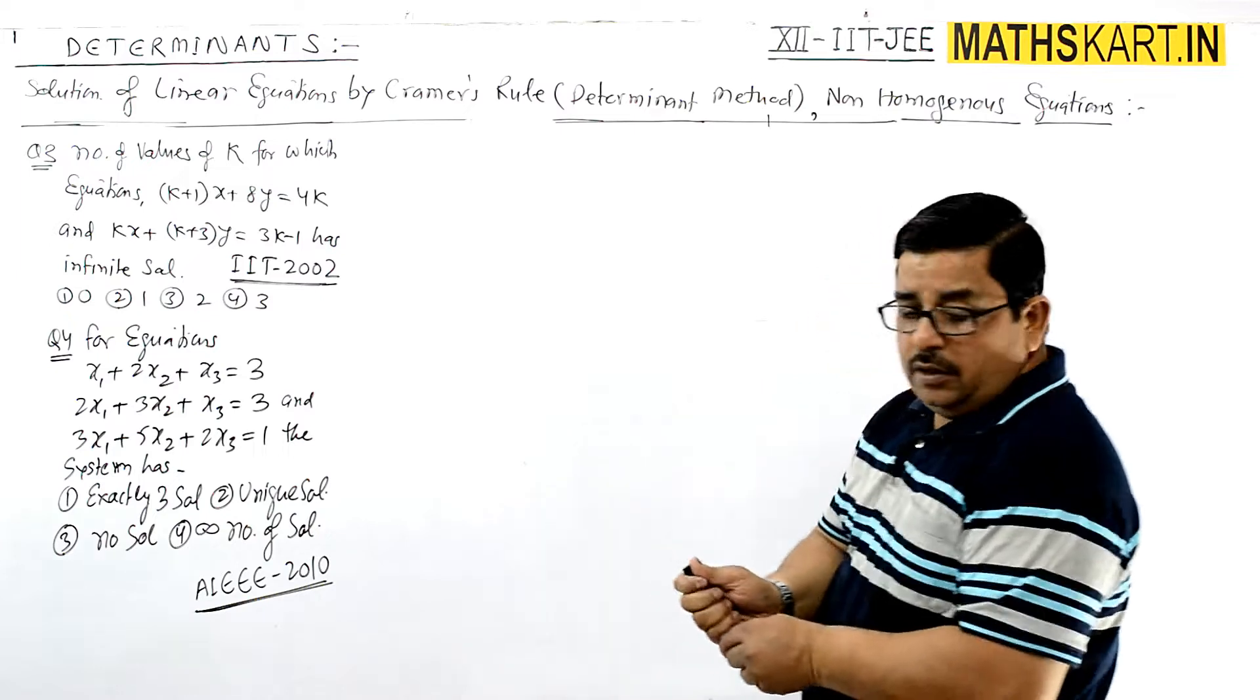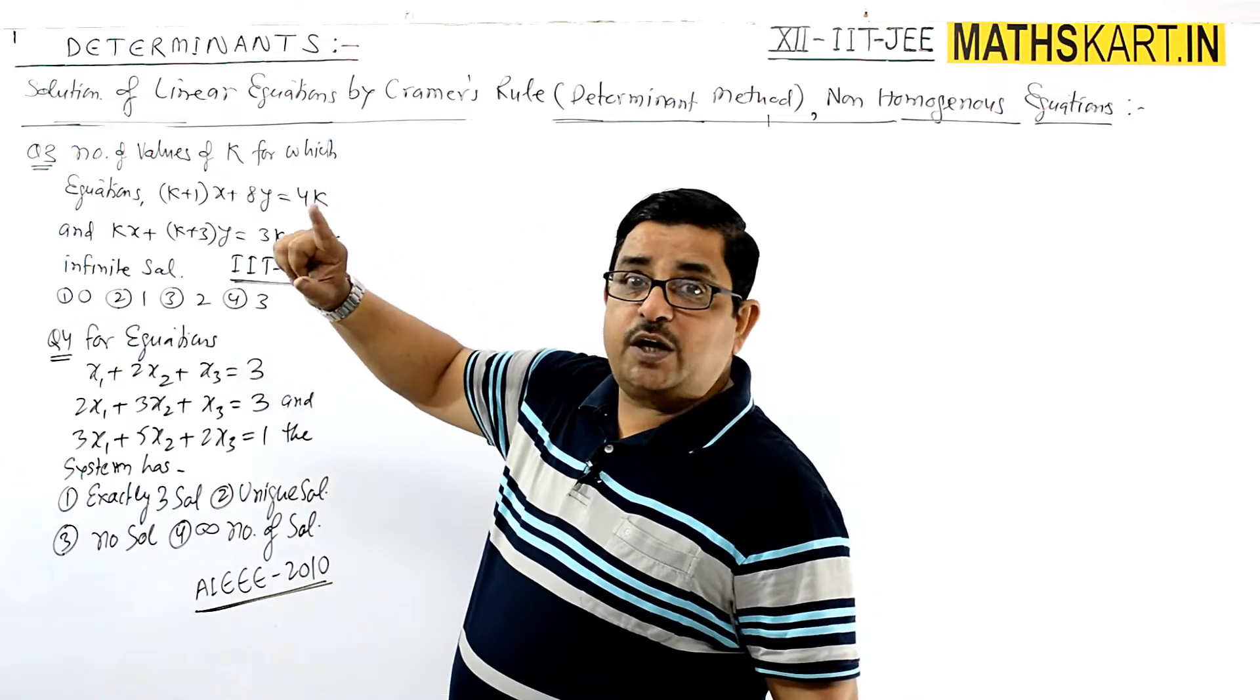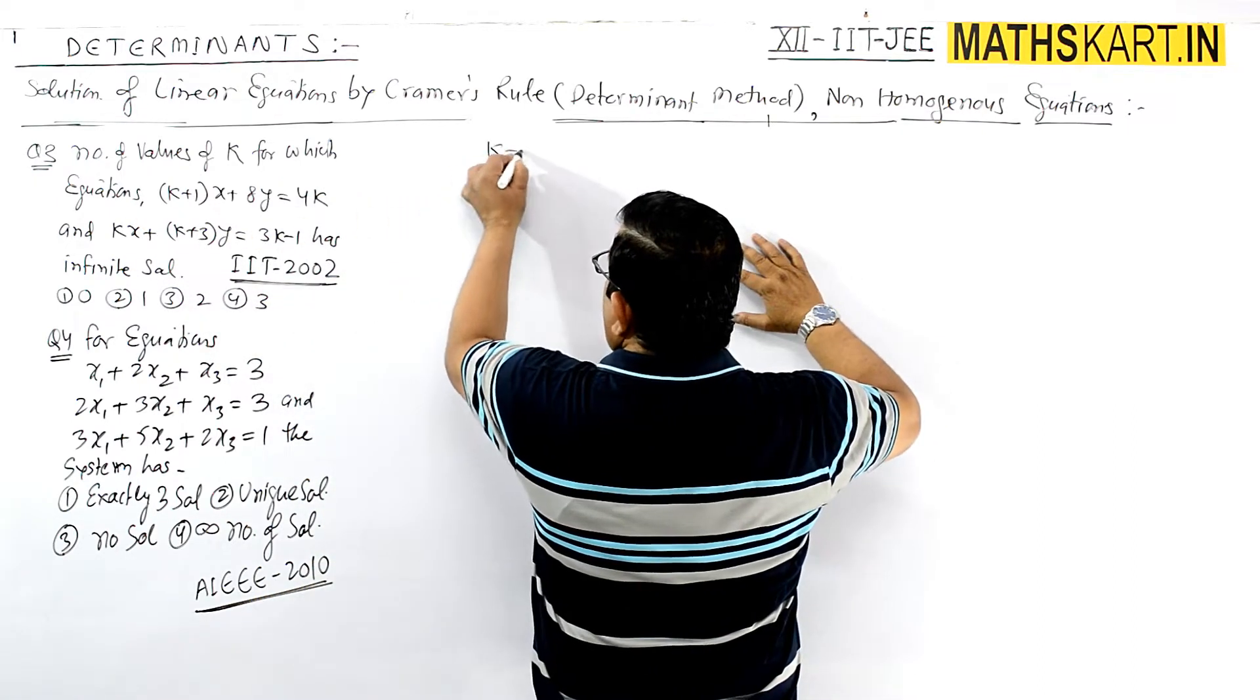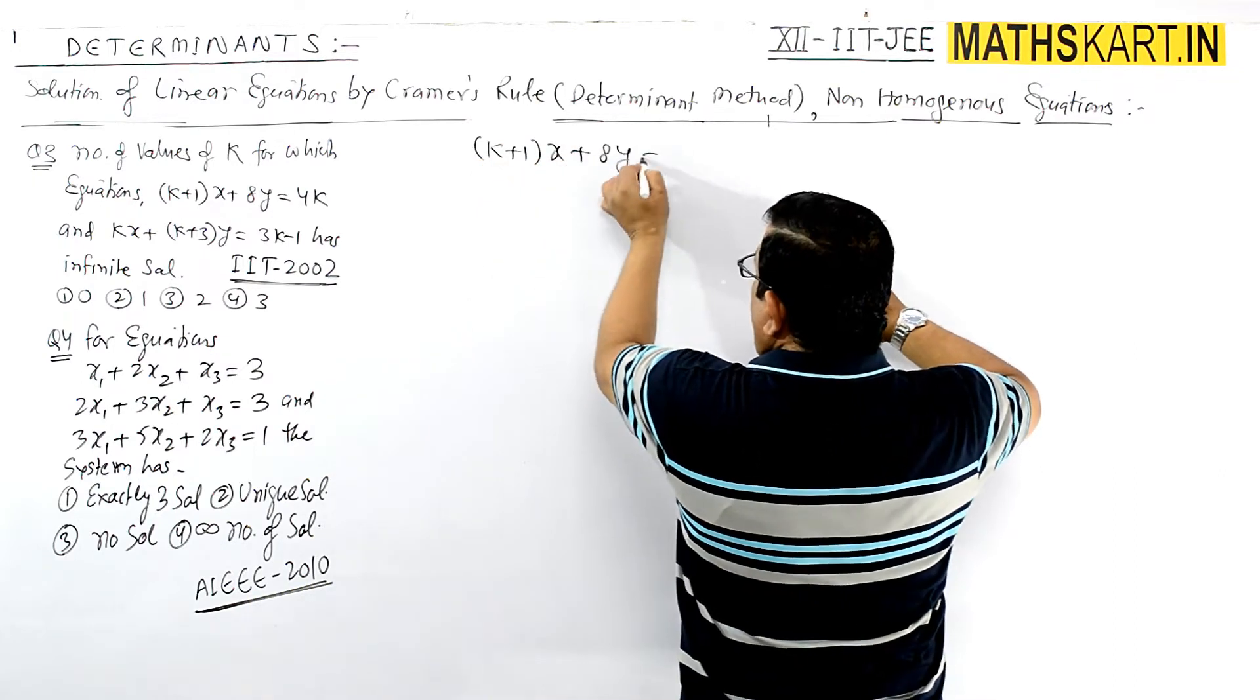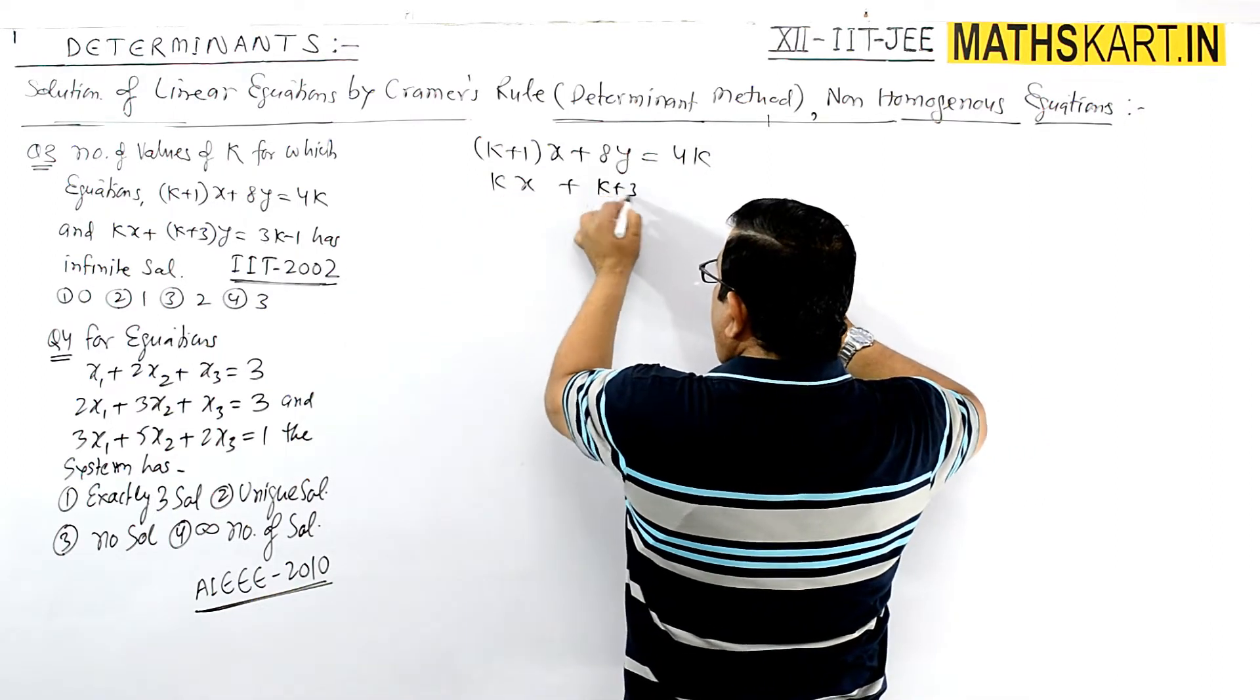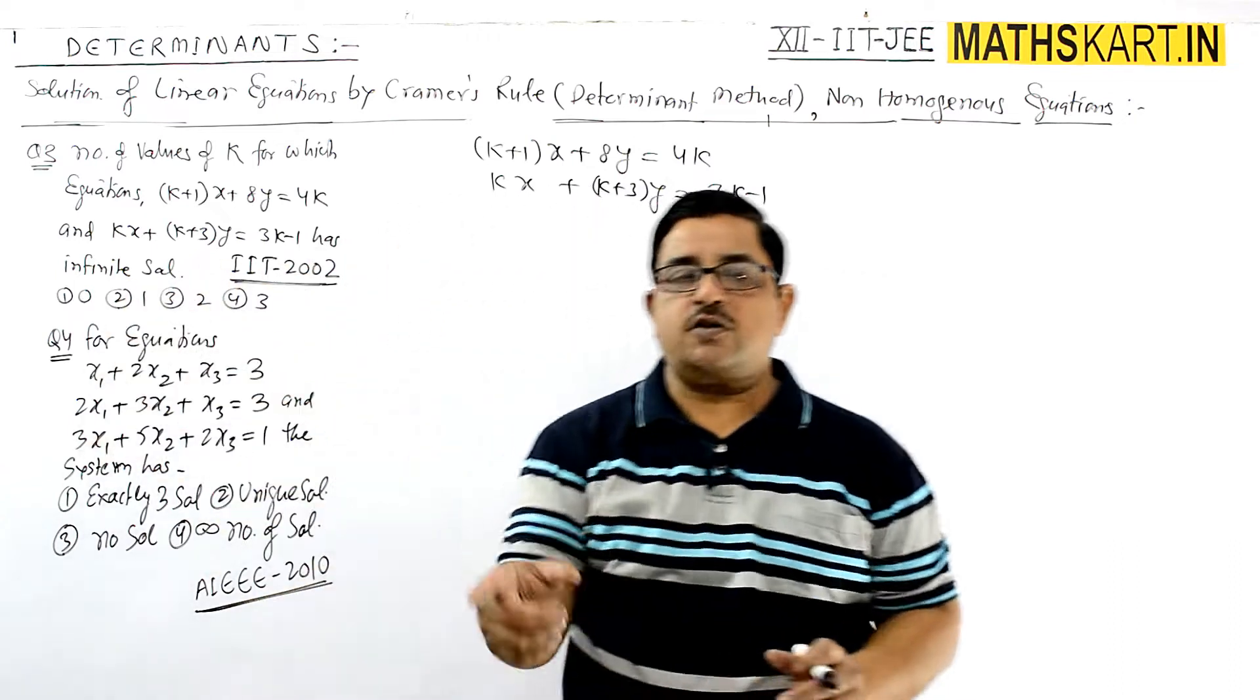Question three asks for the number of values of k for which the given equations have infinite solutions. The two equations are: (k+1)x + 8y = 4k, and kx + (k+3)y = 3k-1. For infinite solutions,